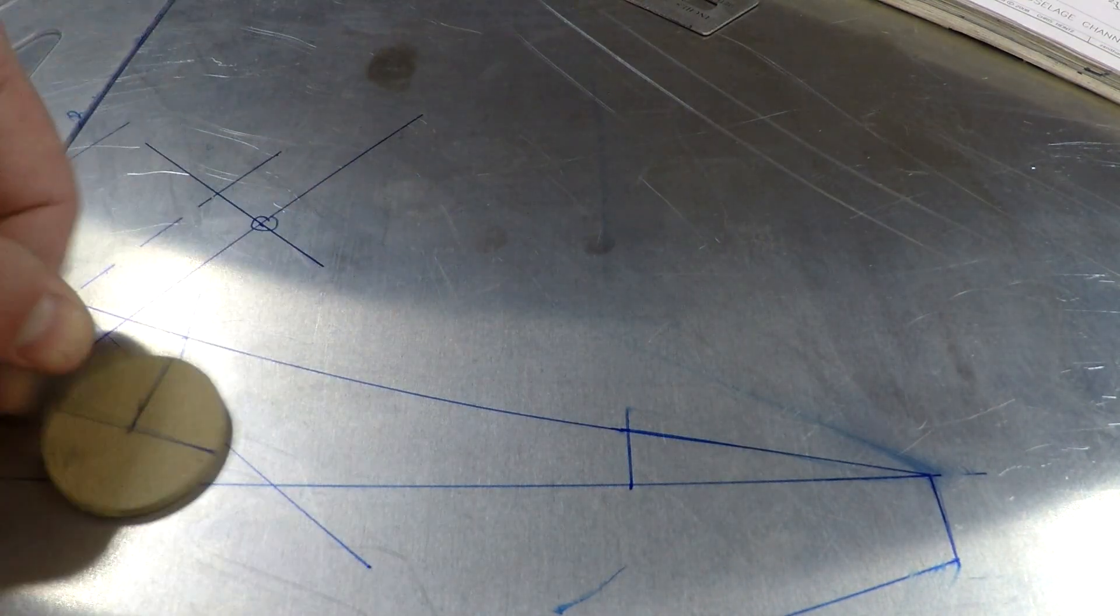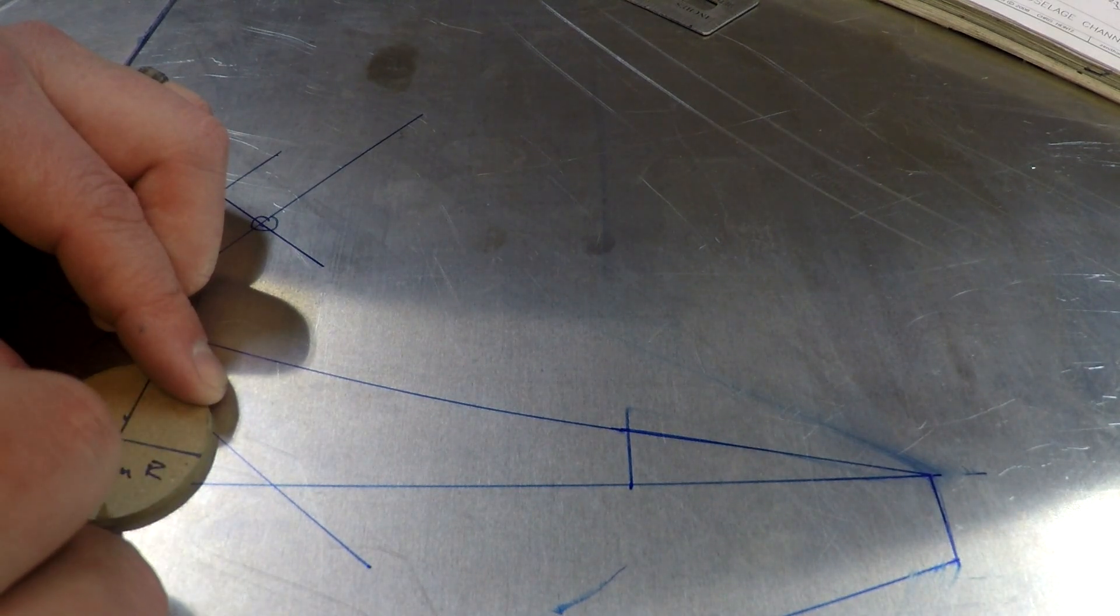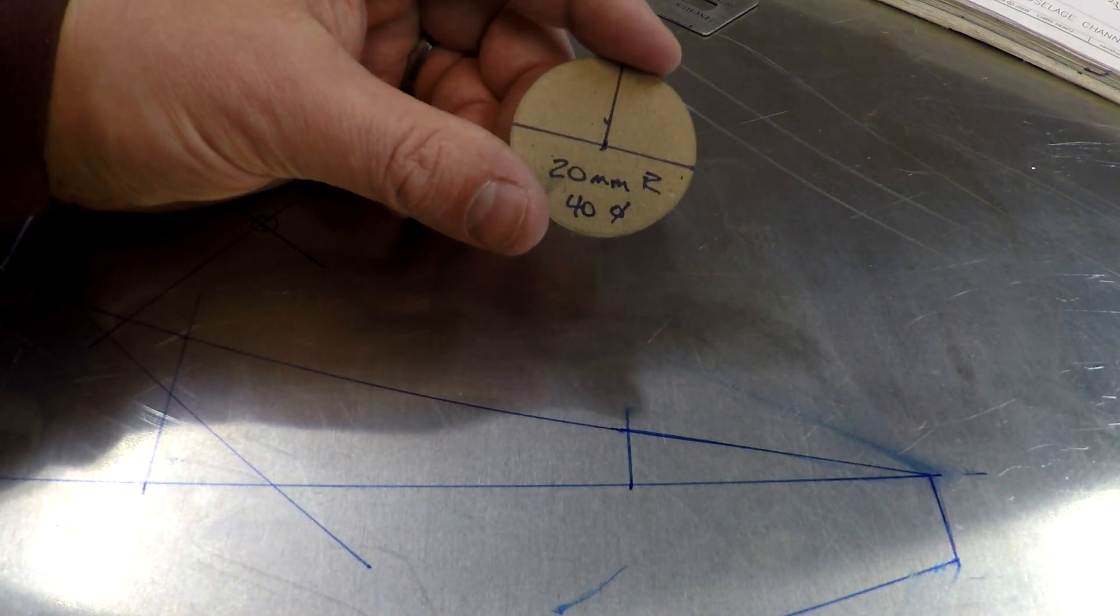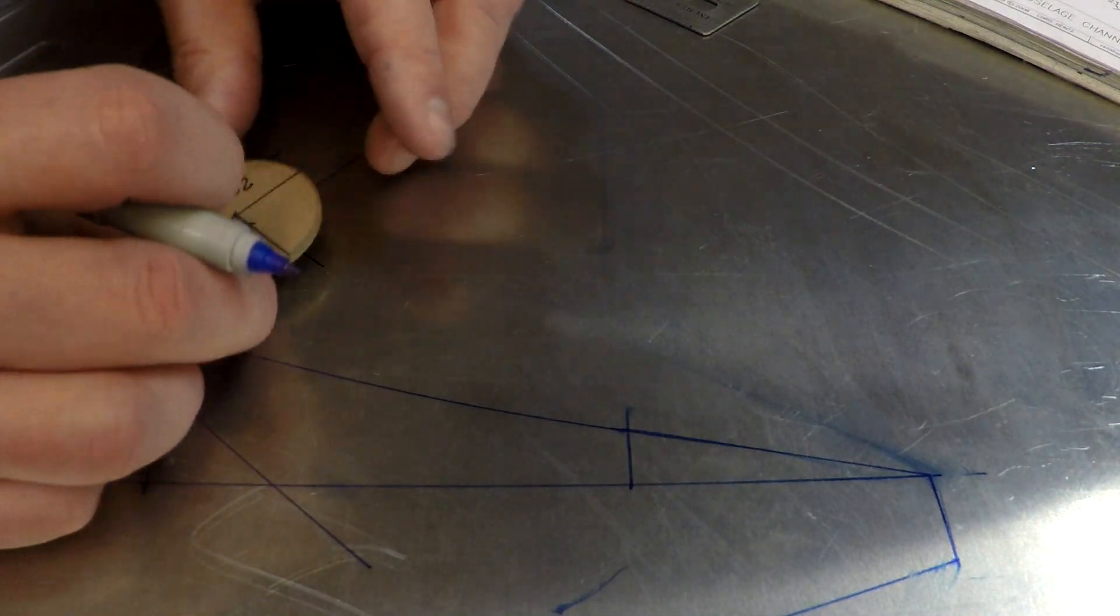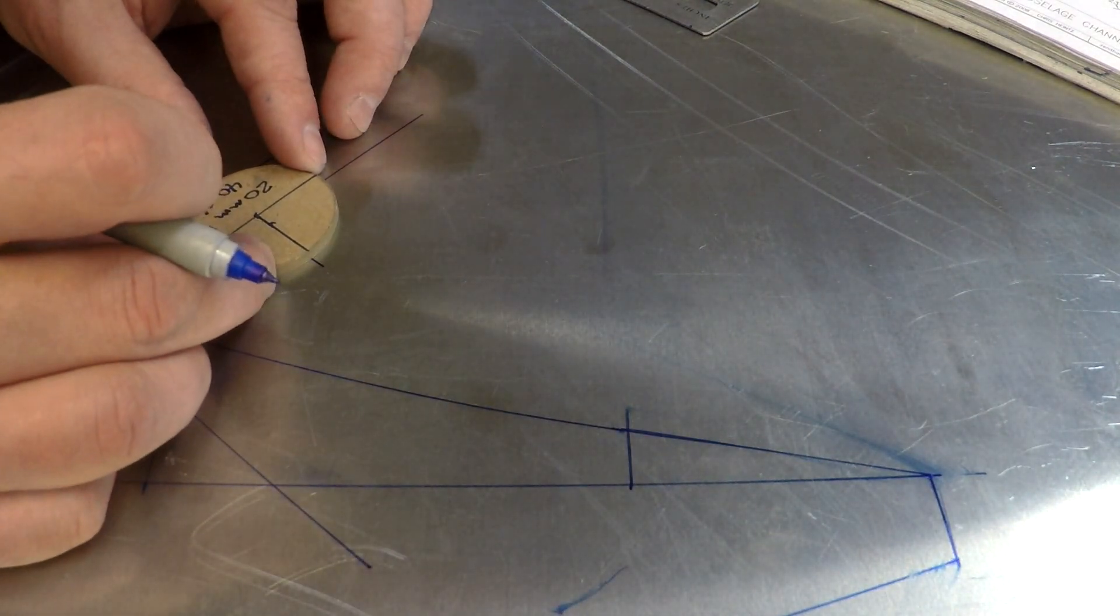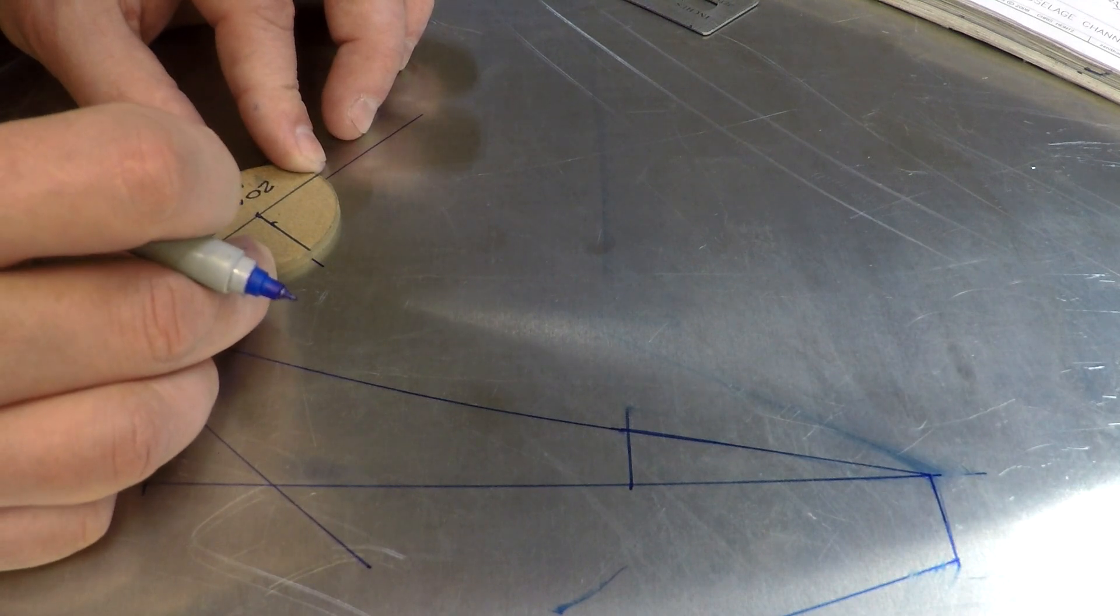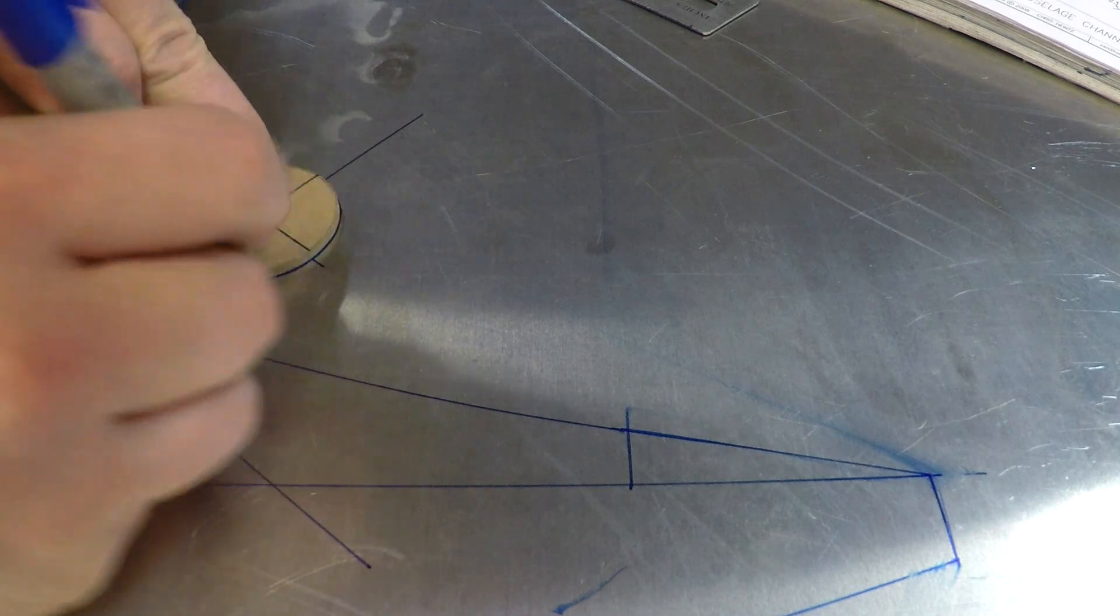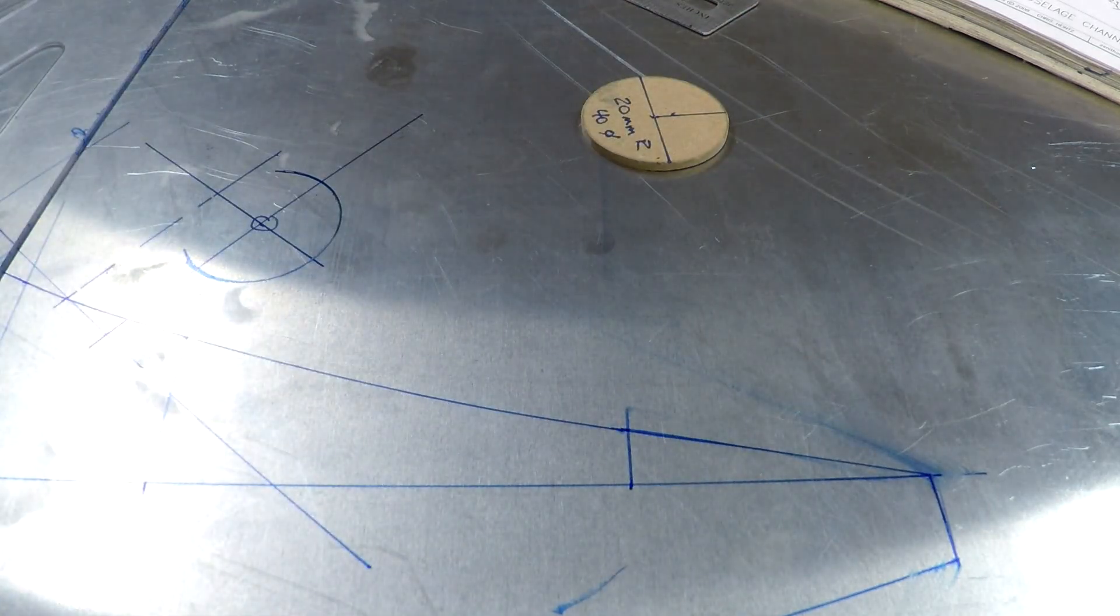This is a 20 millimeter radius slash 40 millimeter diameter circle template. And because I've drawn crosshairs on that, now I can locate this template exactly where it needs to be with those reference lines that go through the center.